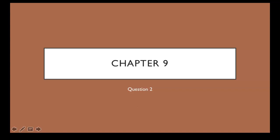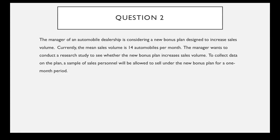Let's work through question number two from chapter nine. The manager of an automobile dealership is considering a new bonus plan designed to increase sales volume. Currently, the mean sales volume is 14 automobiles per month.